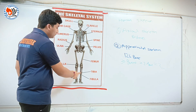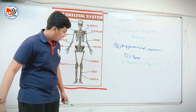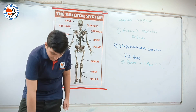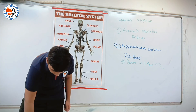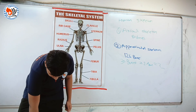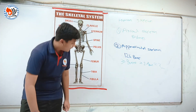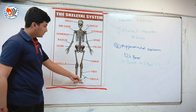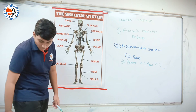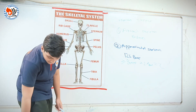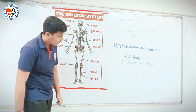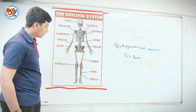Next is tibia — tibia is present on the inside of our leg. And next is fibula — fibula is present on the outer side of our leg.